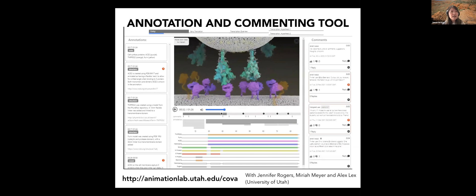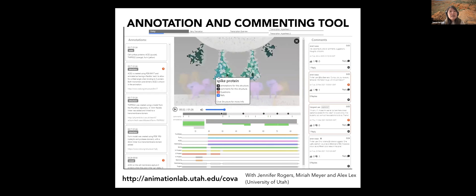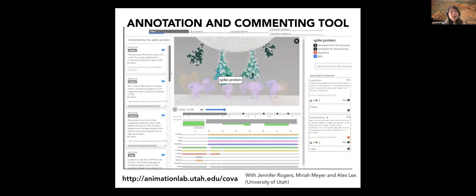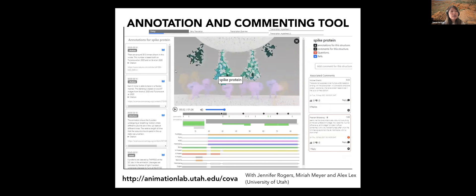So to show you what that looks like here, I'm playing the animation, I pause it, you can mouse over any of the structures you see in the animation to figure out what those proteins are, and then if you click on them, you can see the annotations that are associated with that structure on the left side. And there's additional sort of visual data visualization tools below it.